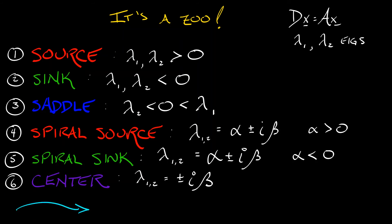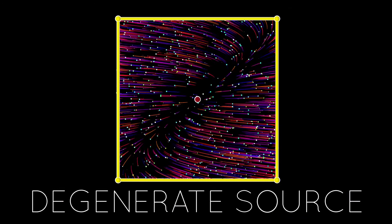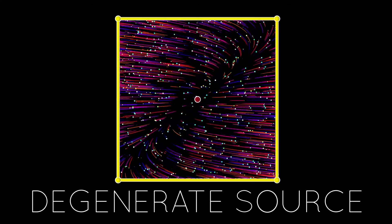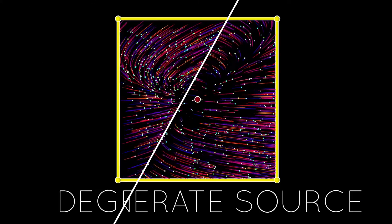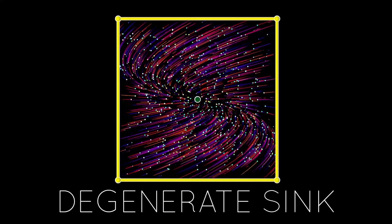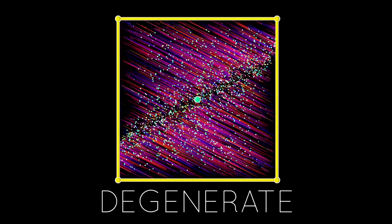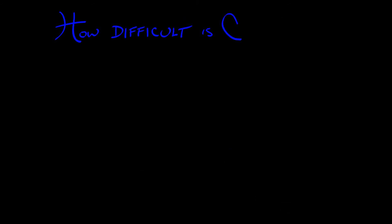There are other things that can happen. What if you have one of your eigenvalues zero? That's called a degenerate equilibrium, and things can get a little bit complicated in that case — we'll have more to say about that later. For now, there are two things we need to do: one, memorize that list and internalize those descriptions; two, talk about how we actually classify things. One approach is you compute the eigenvalues — that can be difficult or sometimes easy.